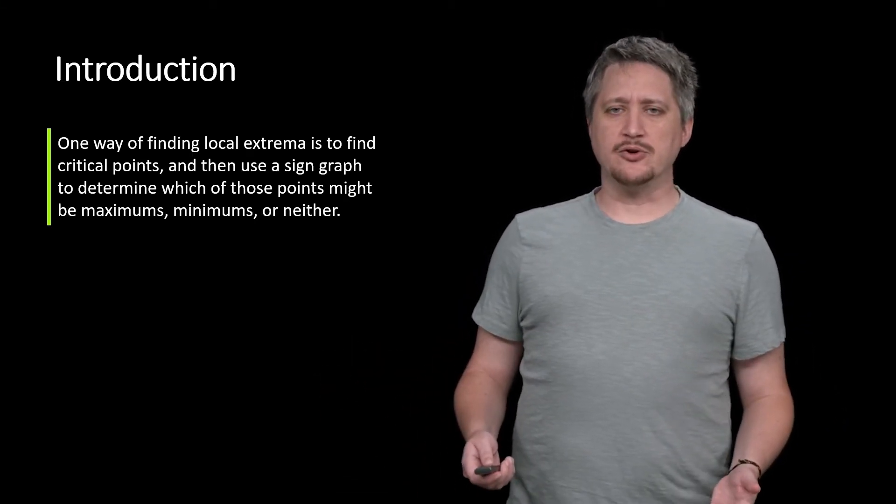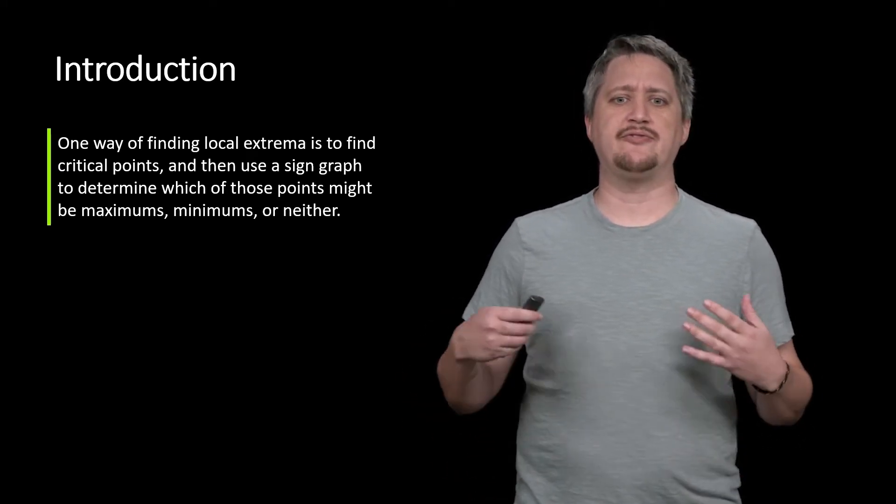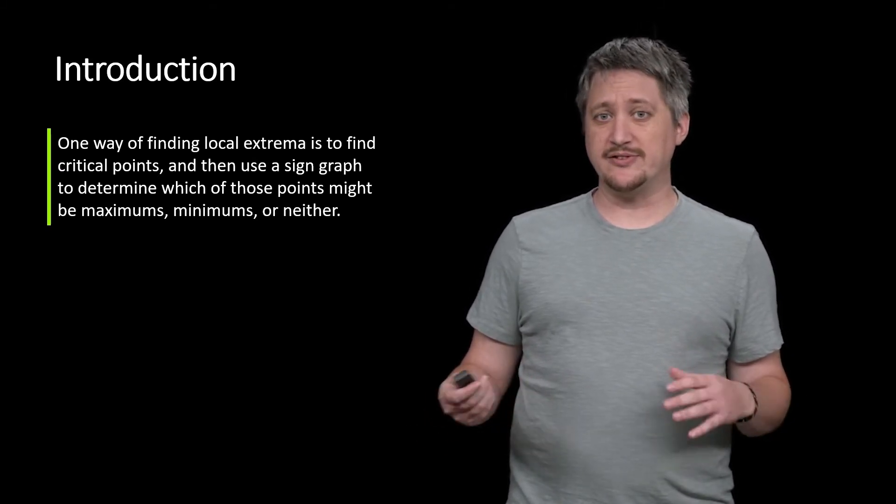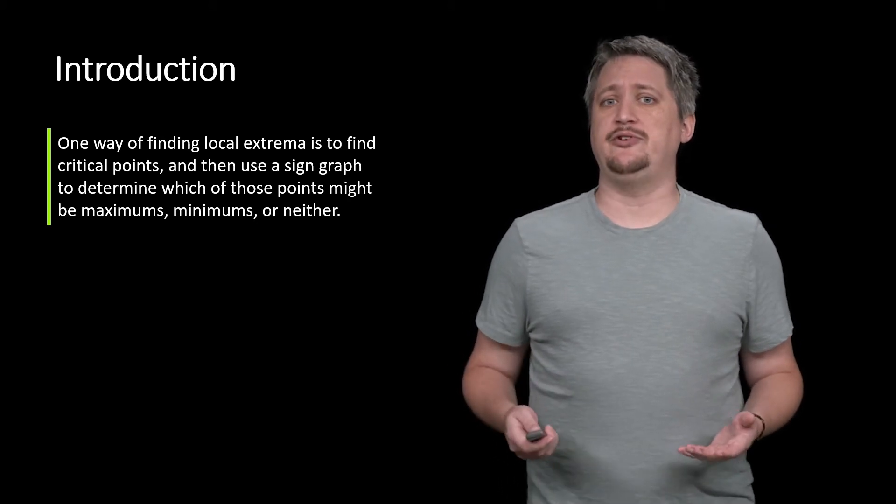Hello. So we've seen one way of finding local extrema: find the critical points, use the sign graph, determine where those points are maximums, minimums, by looking at the transition of the sign on the sign graph. But it turns out there's another way of doing this.